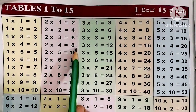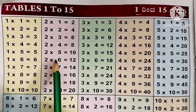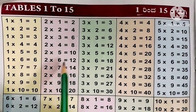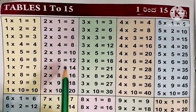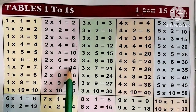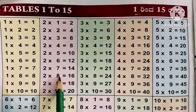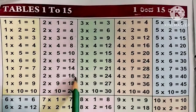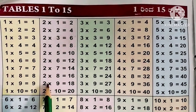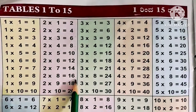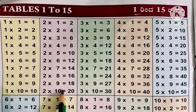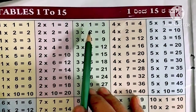2 fives are 10, 2 sixes are 12, 2 sevens are 14, 2 eights are 16, 2 nines are 18, 2 tens are 20.